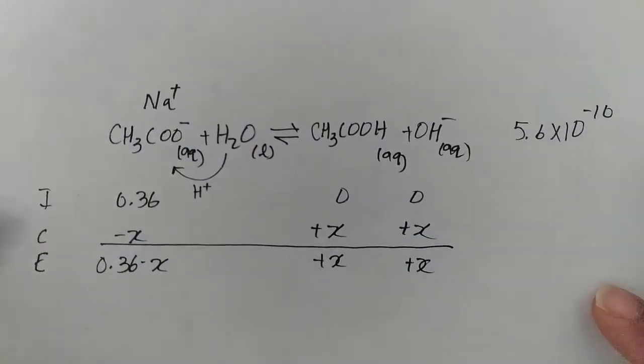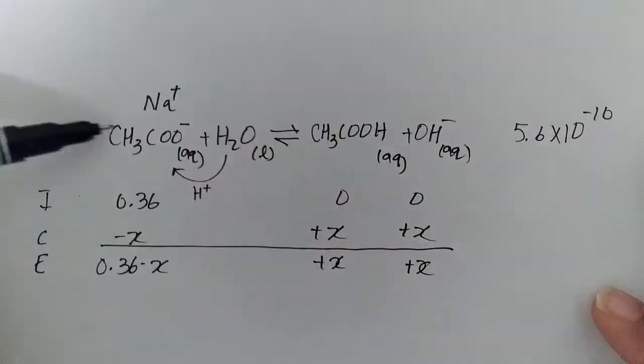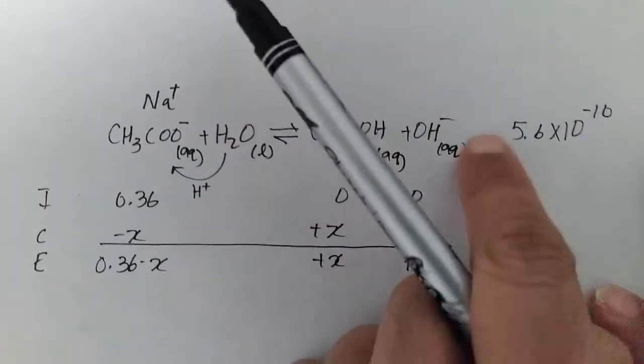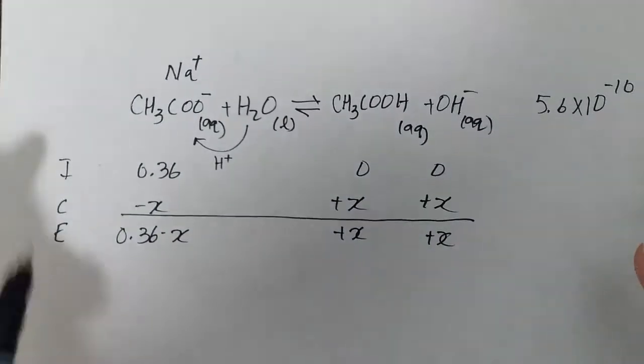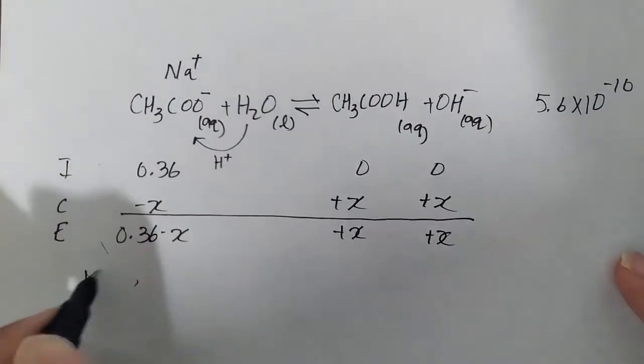So this is what's happened at equilibrium. When the reaction goes this way, not a lot will go this way—the forward way—because again, 5.6 times 10 to the minus 10 is a pretty small number.